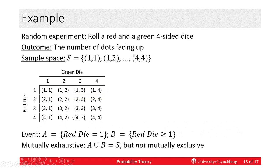Now, let's redefine A as a red die has a value of one. B, the red die has a value of at least one, one or higher. So, there's B. These are mutually exhaustive events because A union with B is equal to our sample space S, but they're not mutually exclusive. They're mutually exhaustive, but not mutually exclusive because the intersection is not empty. In fact, A is contained within B. It's a subset.